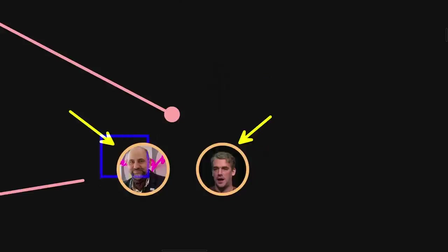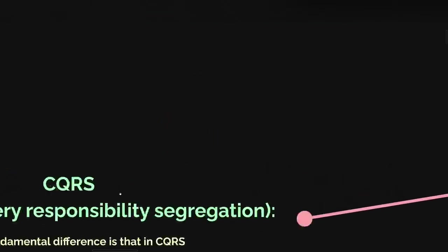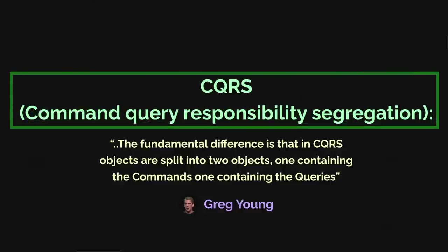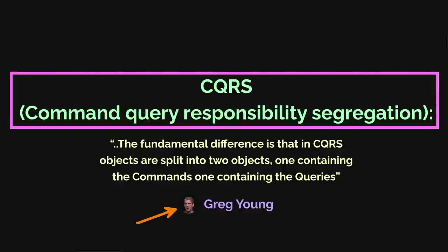That's why Greg Young came up with CQRS. He also likes the separation between commands and queries, but what he sees as more important is having clear boundaries between what manipulates data and what doesn't. That's why he puts an emphasis on splitting the logic into two different classes — one which manipulates data and one that doesn't.